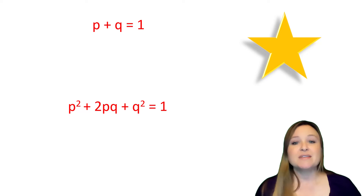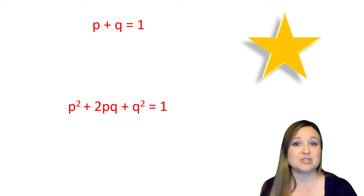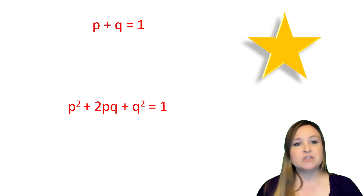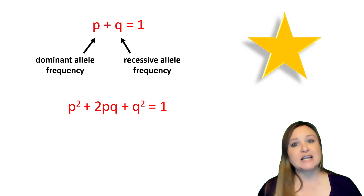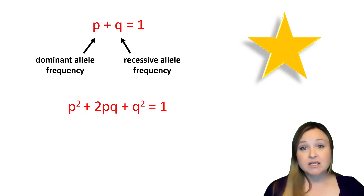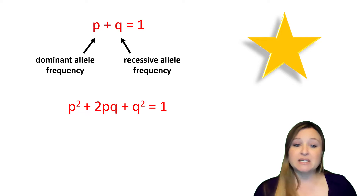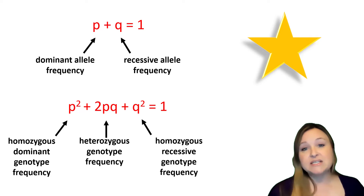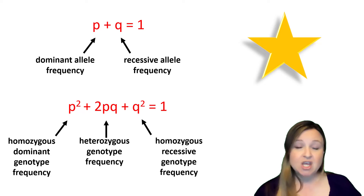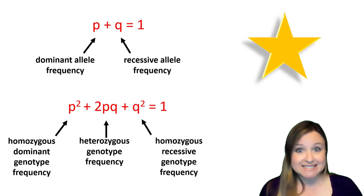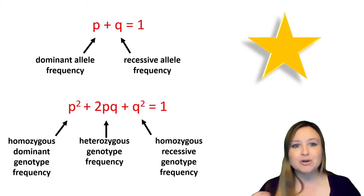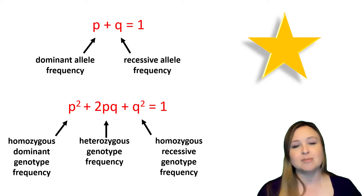So when we think of the Hardy-Weinberg theorem, there are two equations to remember. The first is P + Q = 1, where P is the dominant allele frequency and Q is the recessive allele frequency — we're talking about individual alleles. The second is P² + 2PQ + Q² = 1, where P² is the homozygous dominant genotype frequency, 2PQ is the heterozygous genotype frequency, and Q² is the homozygous recessive genotype frequency. I've put a gold star here so you can find these two equations easily.